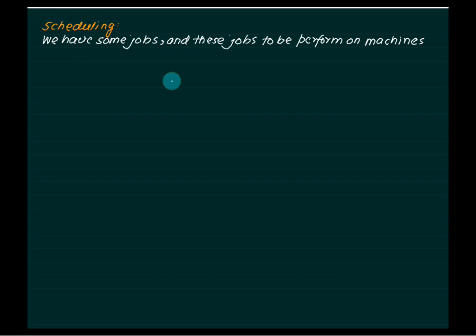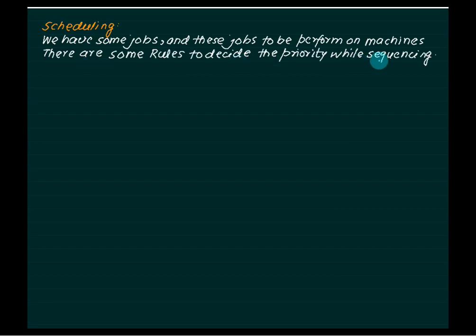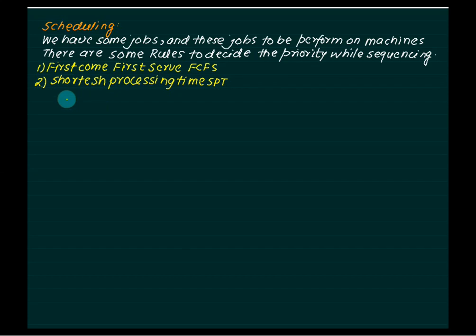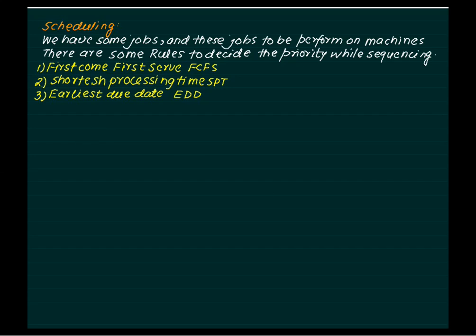There are some priority rules to decide sequencing. First Come First Serve (FCFS): jobs are sequenced in the order they are received. Shortest Processing Time (SPT): jobs are arranged in increasing order of their processing time. Earliest Due Date (EDD): jobs are arranged in increasing order of their due dates — this method guarantees minimum tardiness. Last Come First Serve (LCFS): the last job received is served first, then all operations are finished in reverse order.